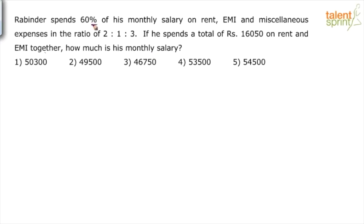Rabindar spends 60% of his salary on three items: rent, EMI, and miscellaneous expenses, in the ratio of 2:1:3. So two parts on rent, one part on EMI, and three parts on miscellaneous expenses.